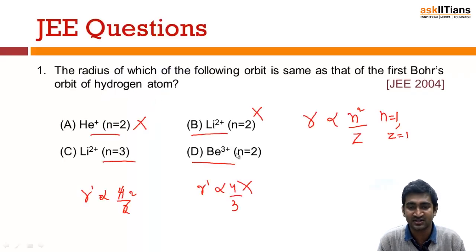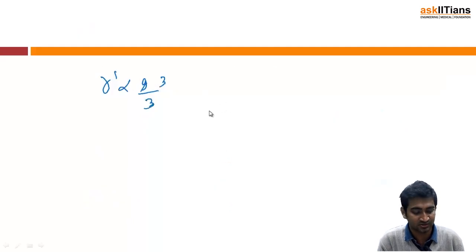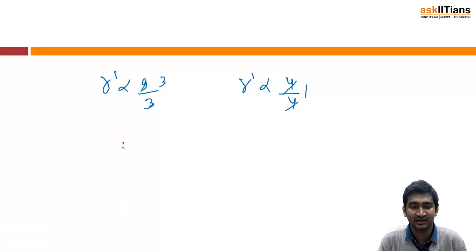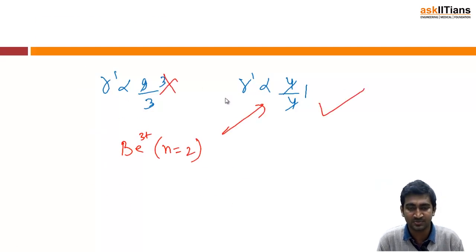I think only one option is left here. R dash is proportional to n=2, so 4 by the Z atomic number value which is also 4. Yeah, so it is 1. That's why the correct answer will be D, which is Be3+ for n=2. This is the correct answer, all three options are wrong.